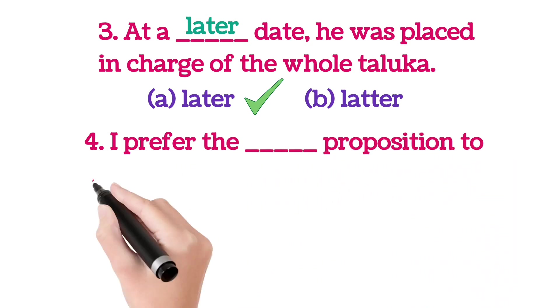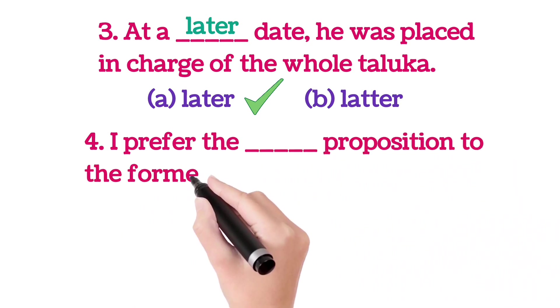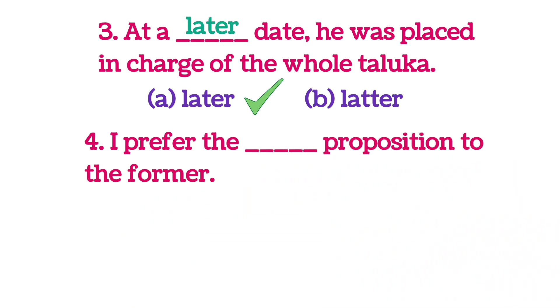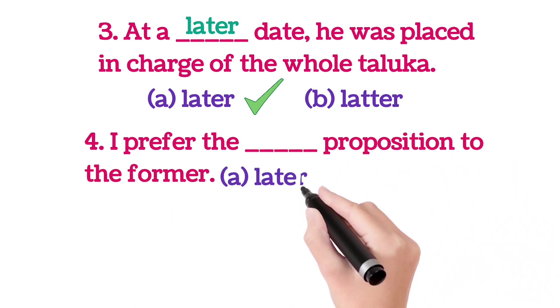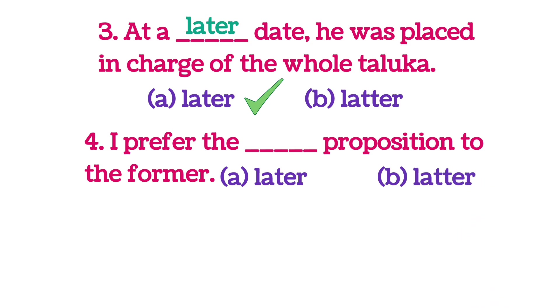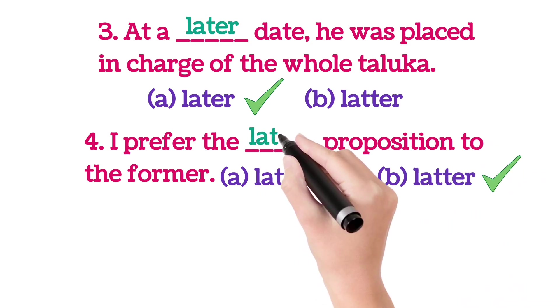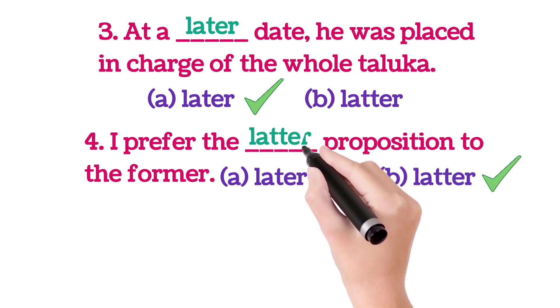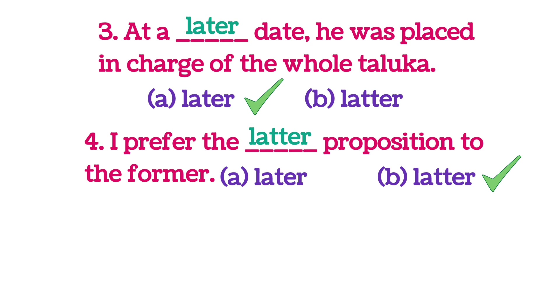'I prefer the ___ proposition to the former.' A: later, B: latter. B is correct. I prefer the latter proposition to the former.